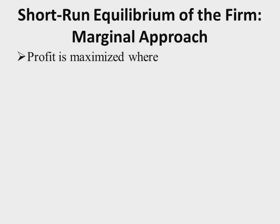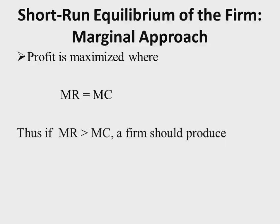Under the marginal revenue approach, profit is maximized where marginal revenue equals marginal cost. This is the profit-maximizing rule we adopt under perfect competition and other market structures. If marginal revenue is greater than marginal cost, a firm should keep on producing, because each additional output brings in more revenue than it costs.